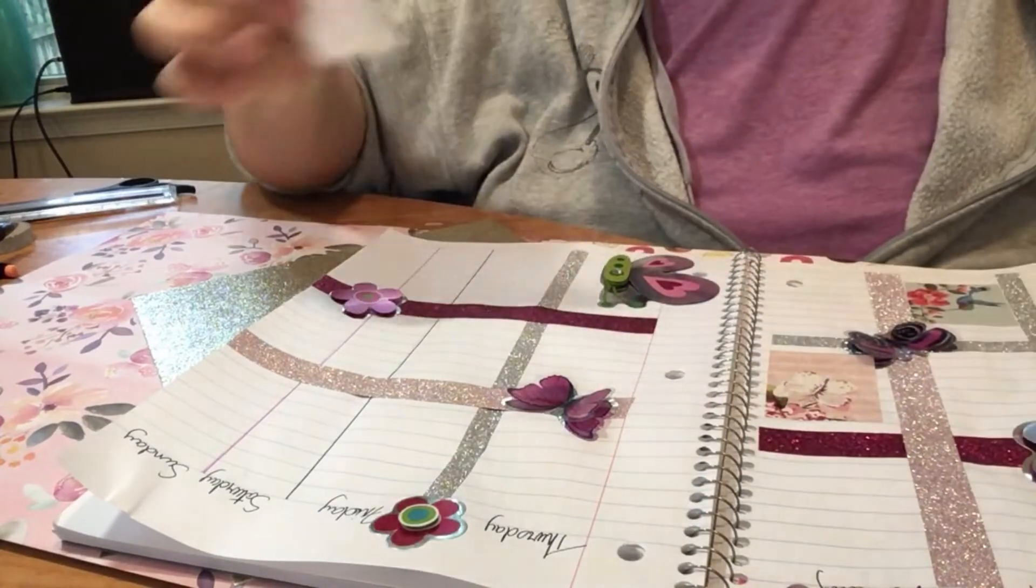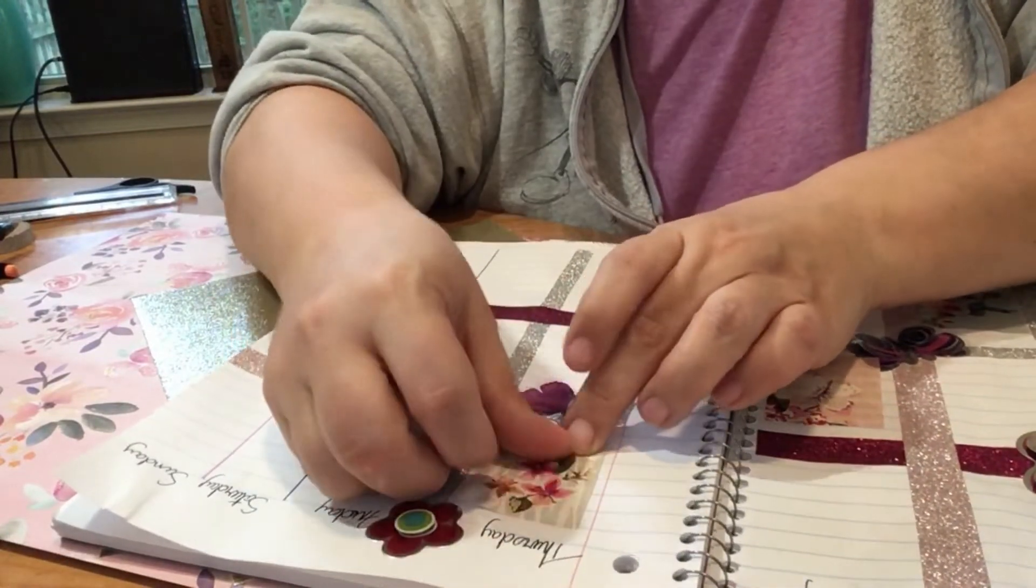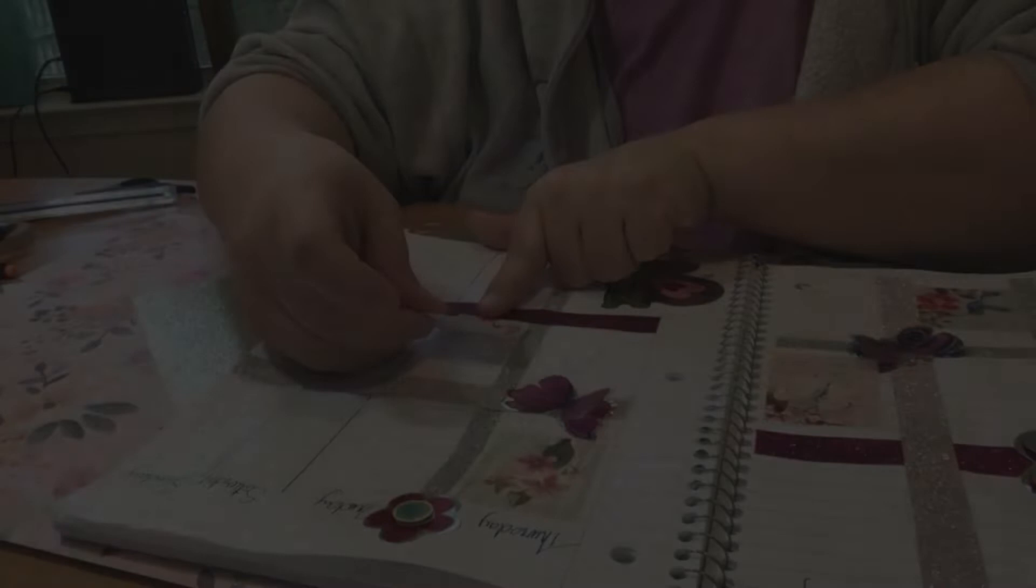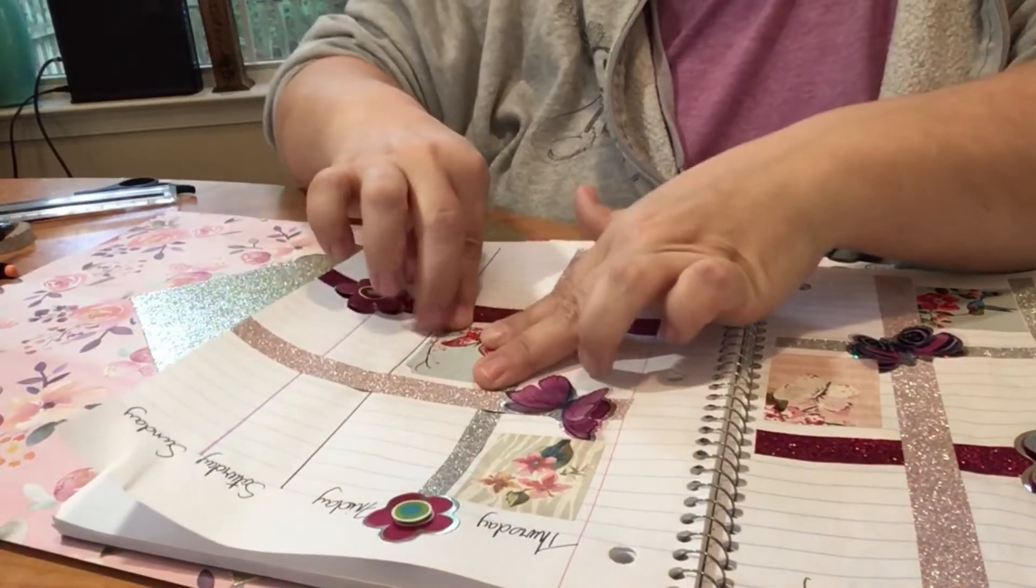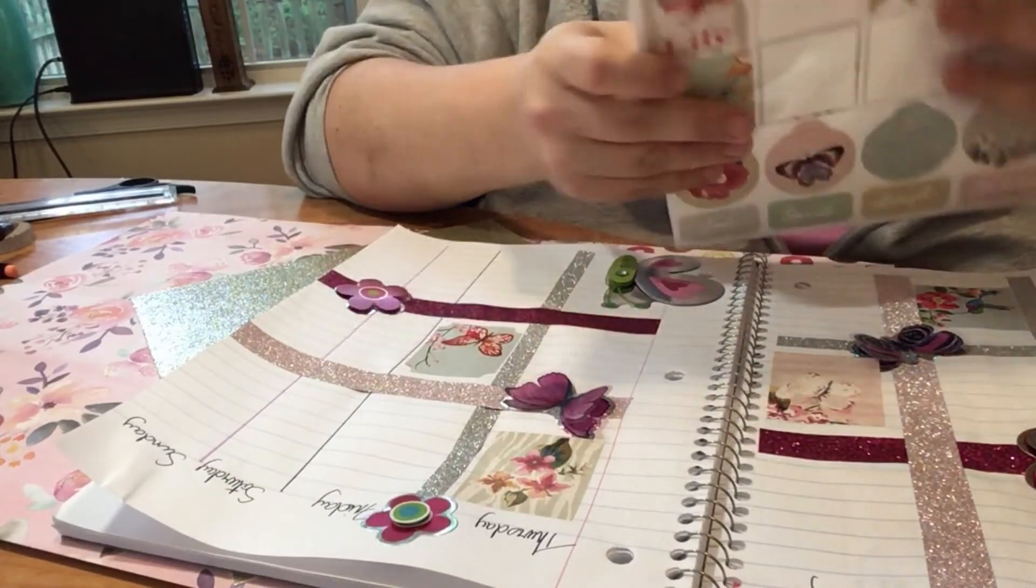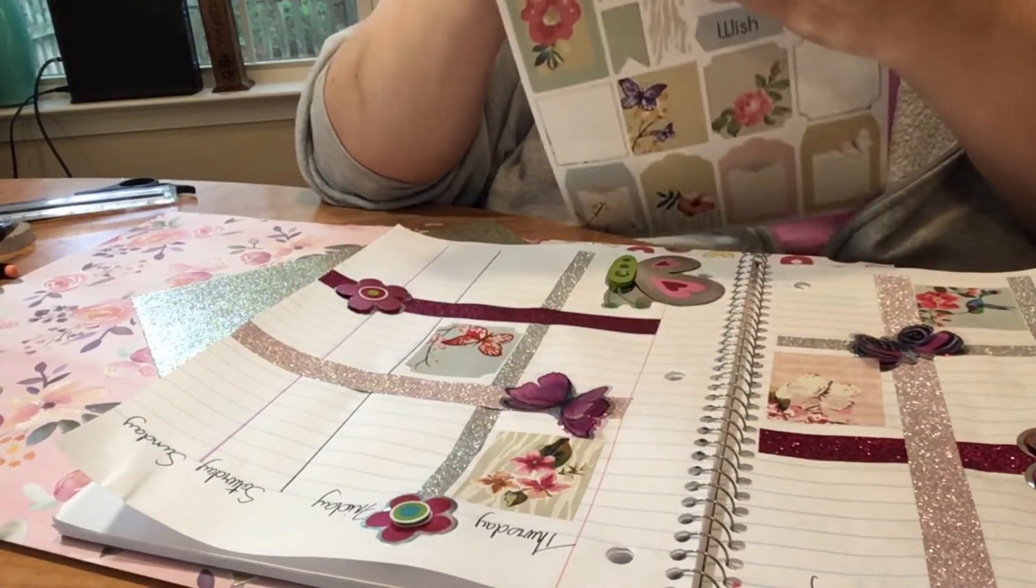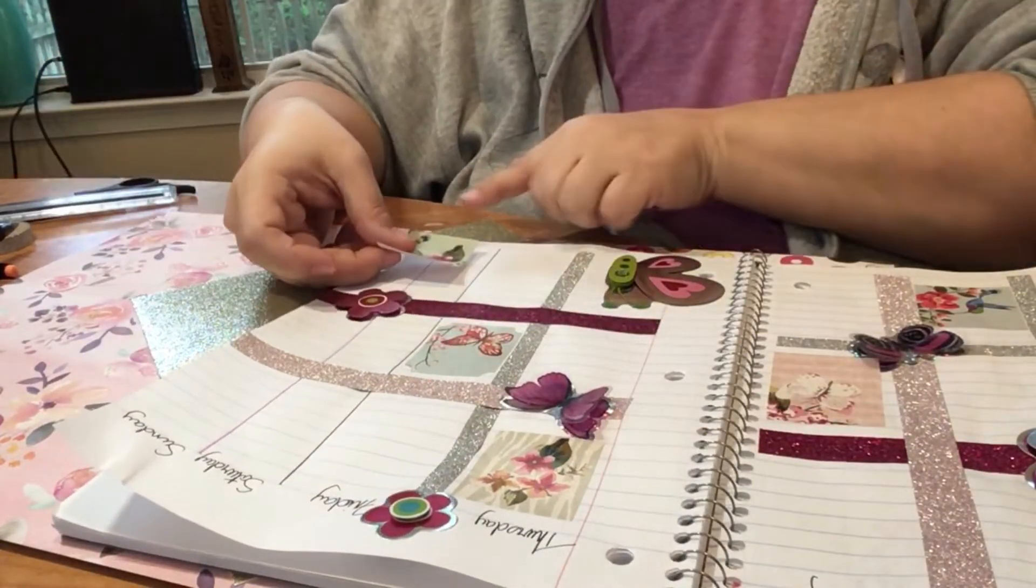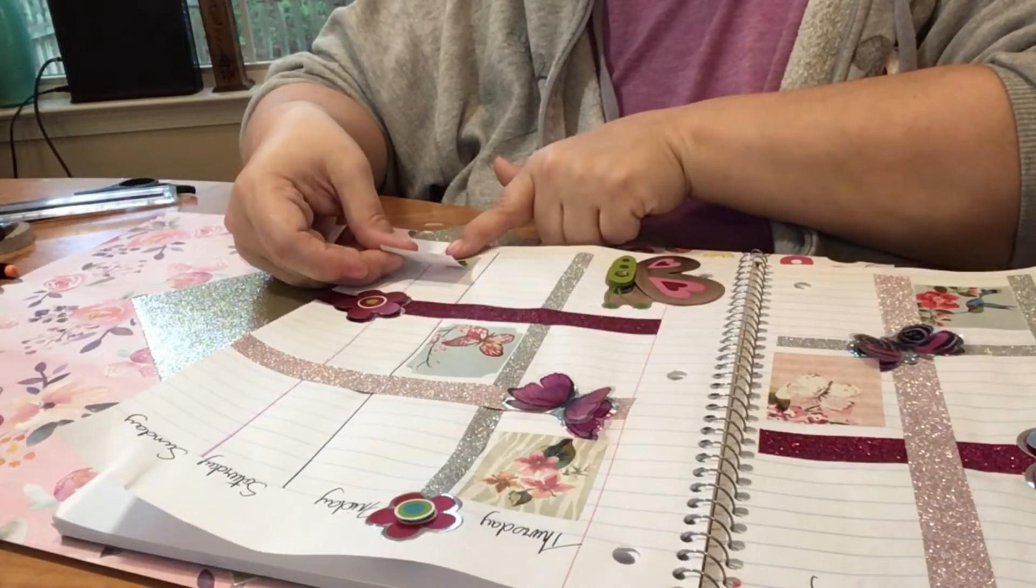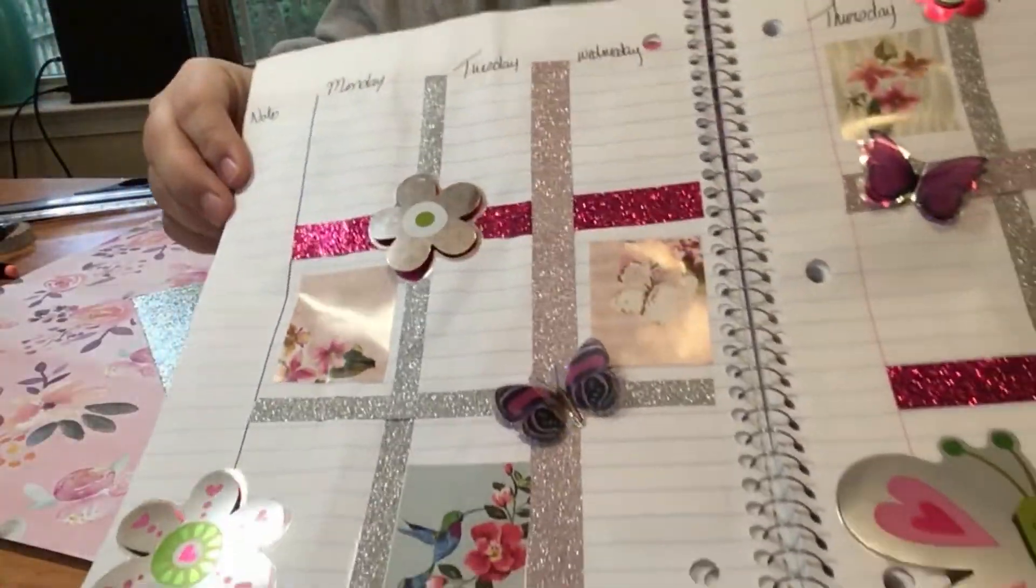And again, guys, you do not need a big huge hundred and sixty dollar name brand whatever planner. If you have one, good for you, you can still plan with me. But I'm here to show you - this is Dollar Tree, and it's a notebook. It was 50 cents - it actually wasn't Dollar Tree, it was on sale at Kmart for 50 cents. You could literally use this, anything. Seriously, you do not have to be top line, top dog. All right, so this is where we are so far, and I'm totally happy with it.